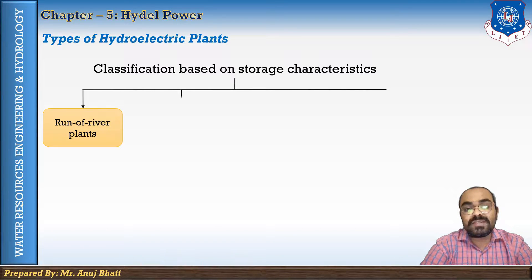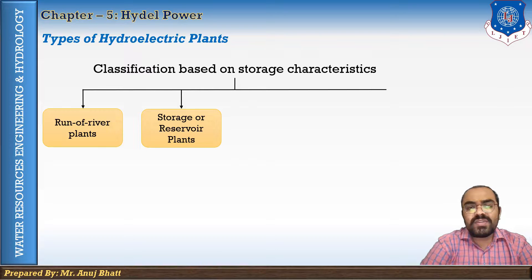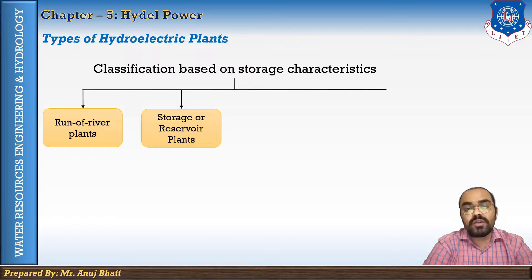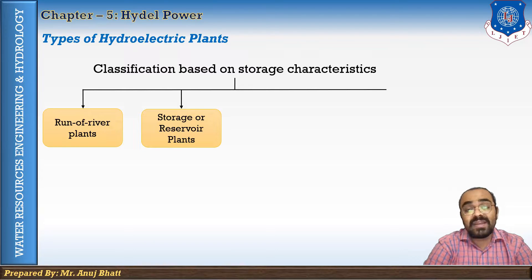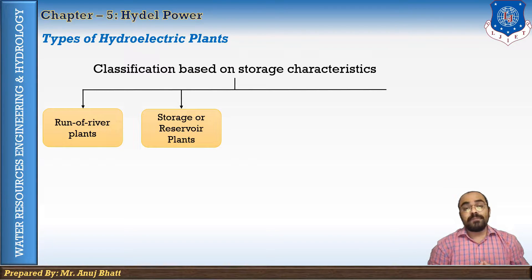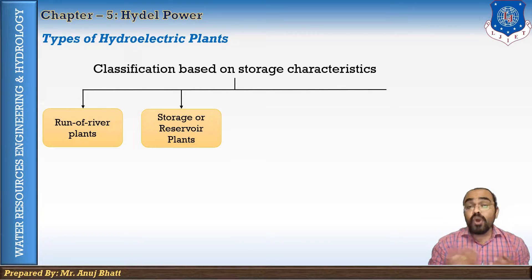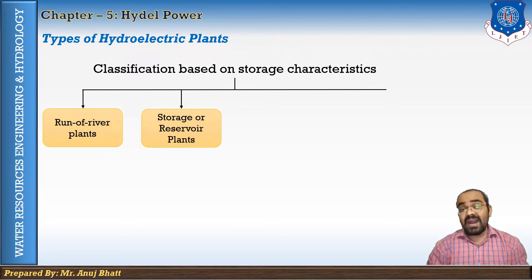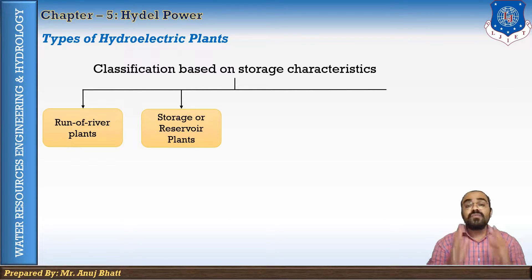The next classification based on storage characteristics is storage plants or reservoir plants. In storage plants, a dam is constructed to create a large reservoir to store water during the period of excess supply, to take care of fluctuations in river supply. Such plants are generally located on perennial or non-perennial rivers and are generally medium head and high head plants.